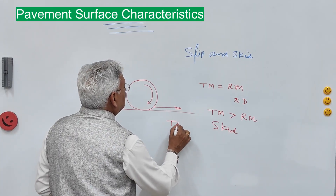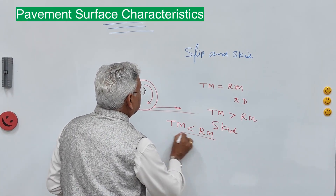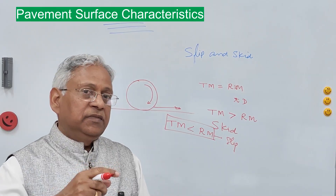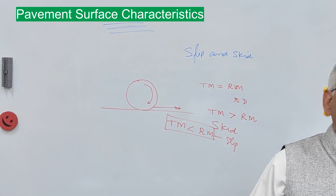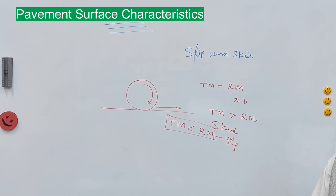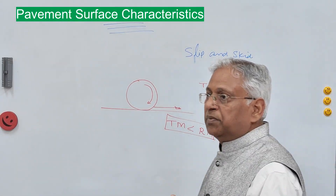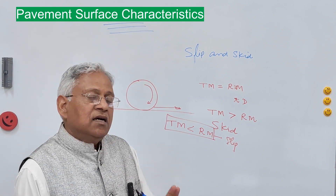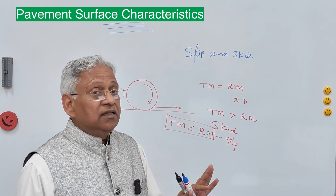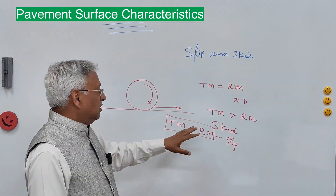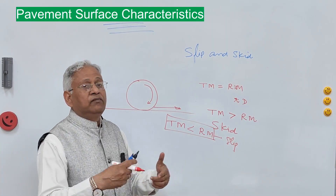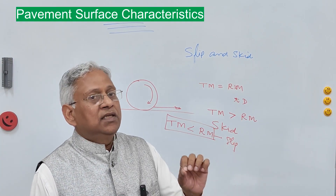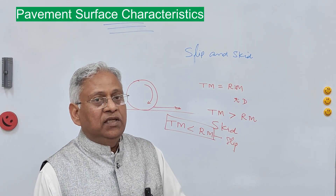The second condition is when translatory motion is less than the rotatory motion of the wheel — that is called slipping. This happens when the force applied by the engine is more than the tractive power of the vehicle, so the wheel revolves but translatory motion is less than rotatory motion. This occurs when friction is very low. In extreme condition, translatory motion can be zero and rotatory motion 100%, such as when loose sand is below the wheels — only slippage, no translatory motion.